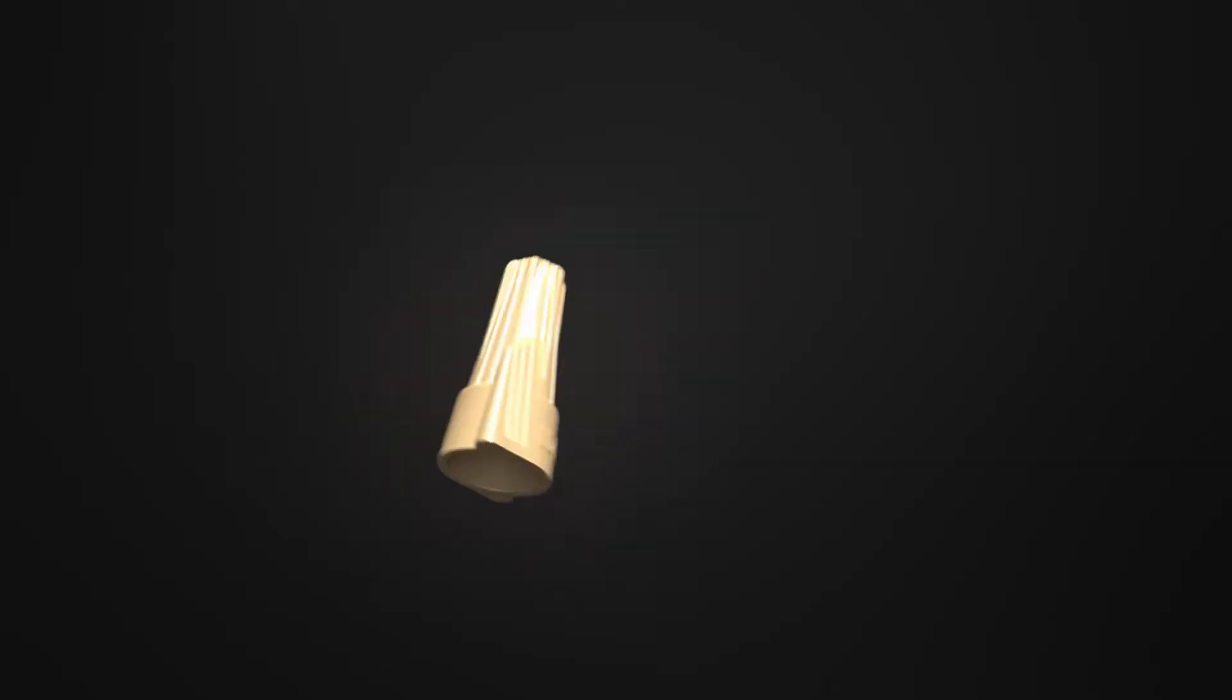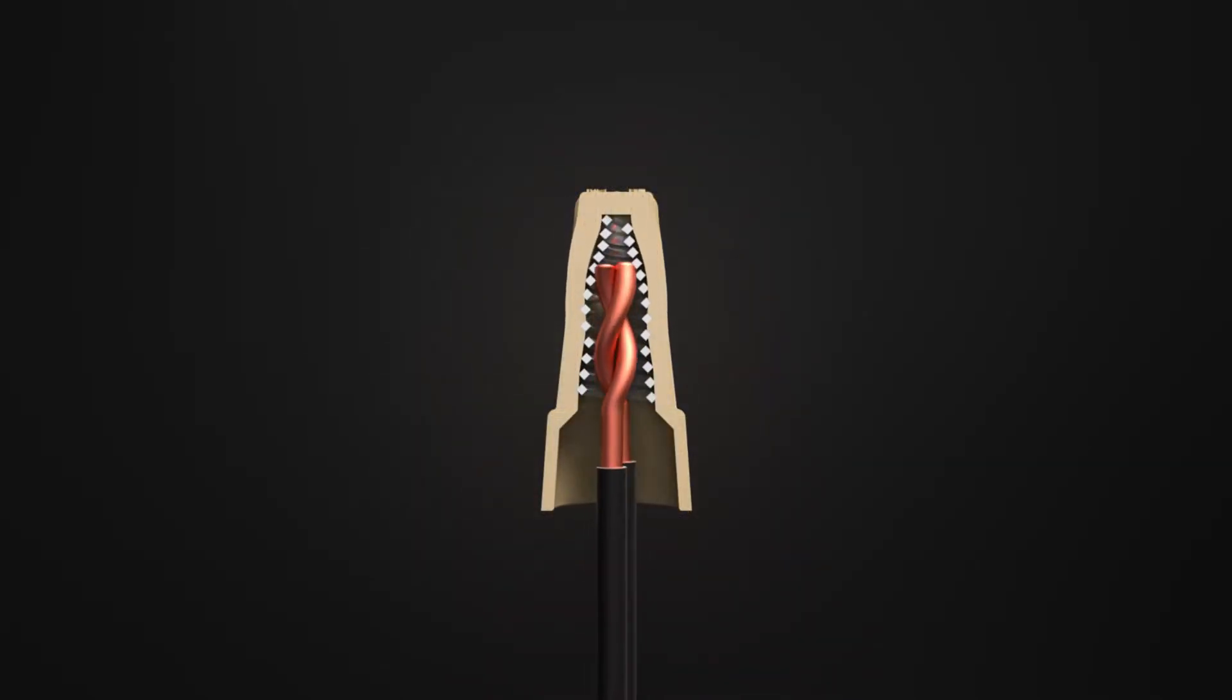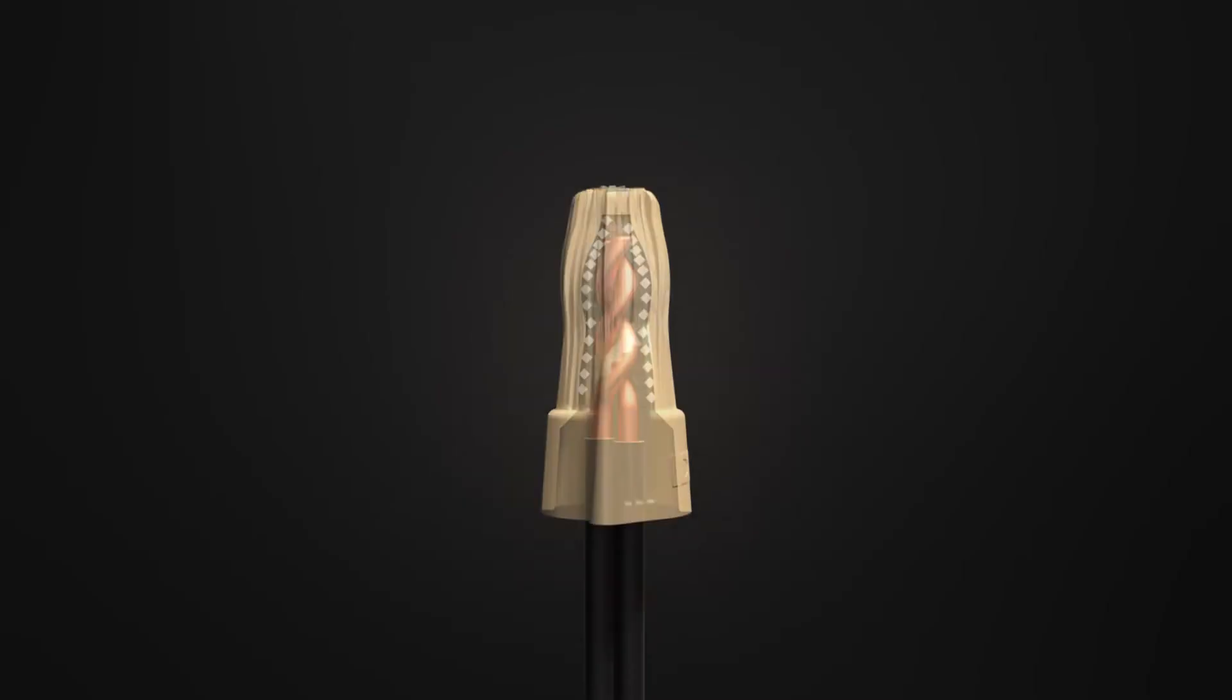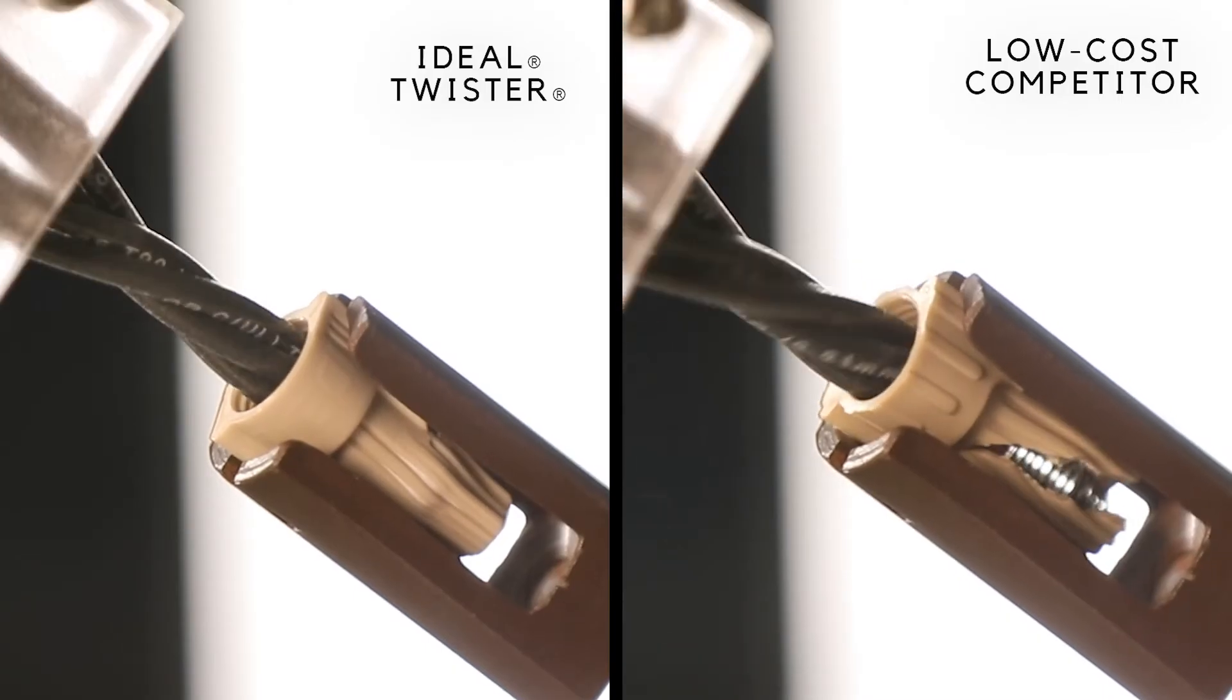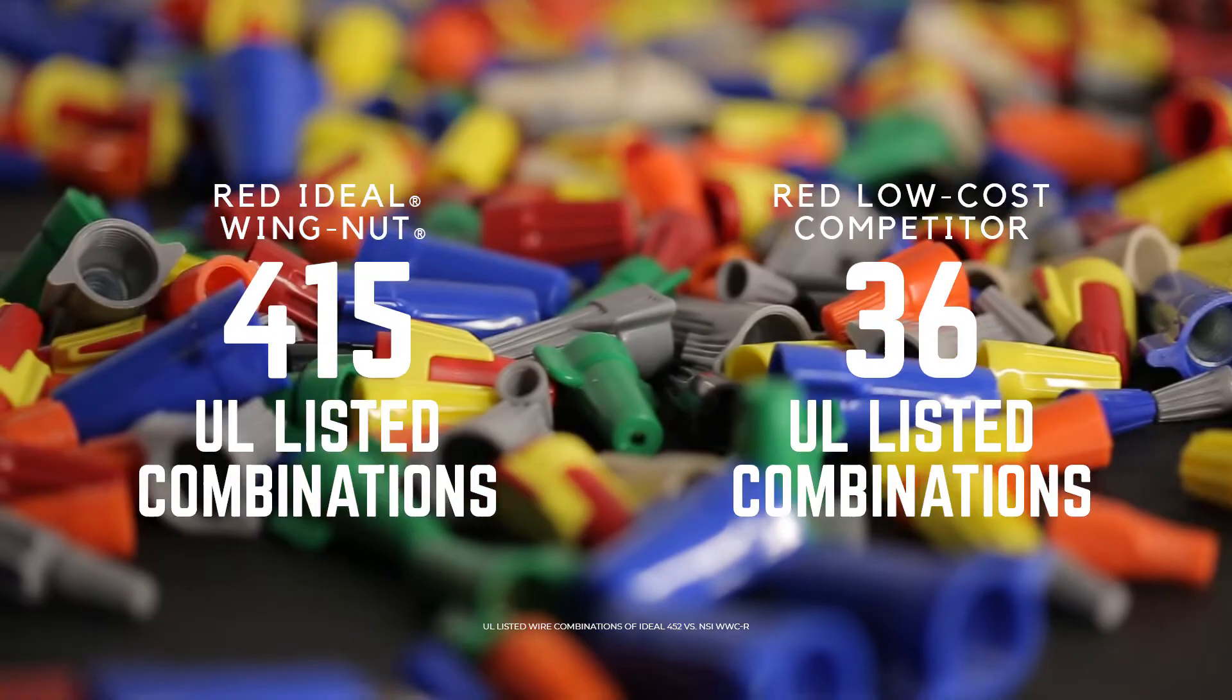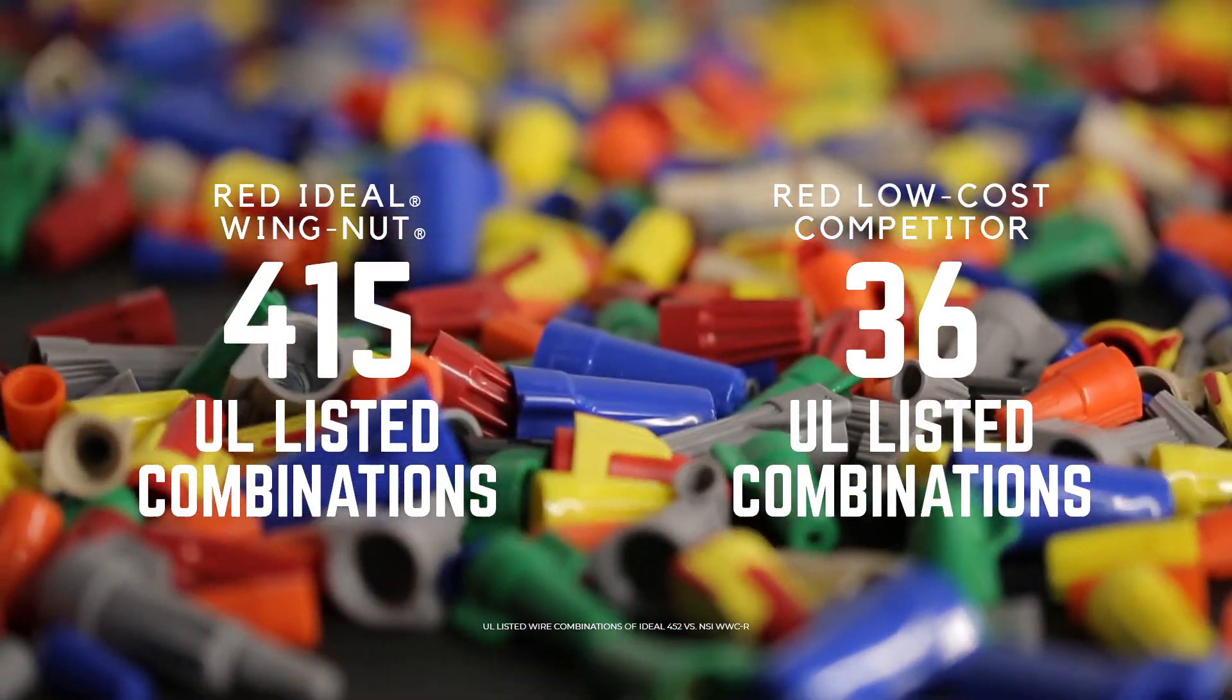They're designed with an expanding interior spring that grips wires for a secure connection and a plastic outer shell that flexes without cracking, to ensure reliability across the widest range of UL wire combinations.